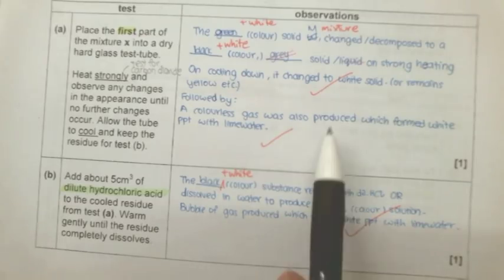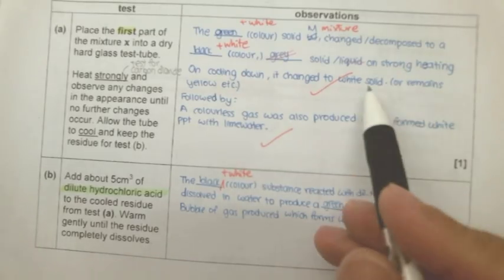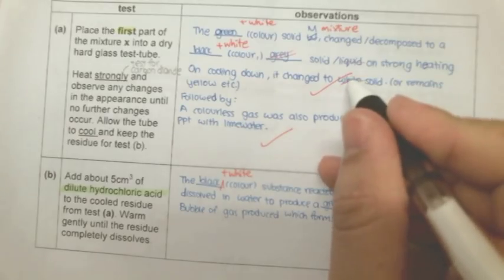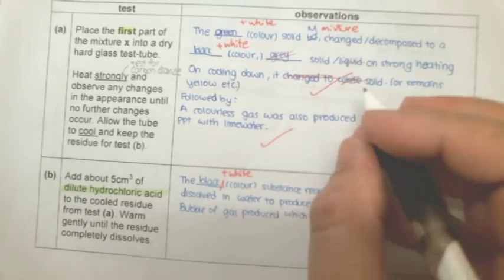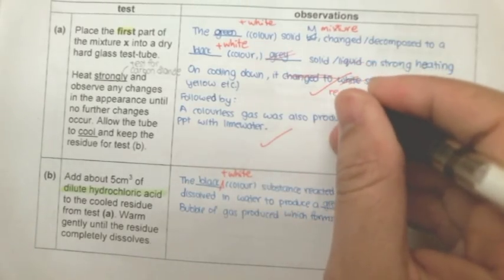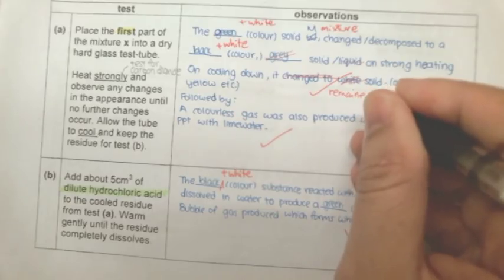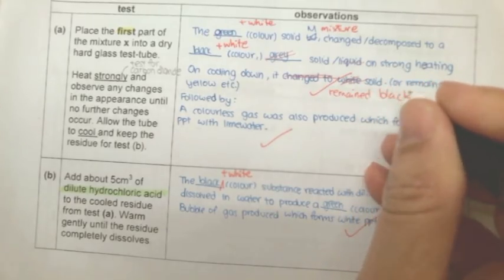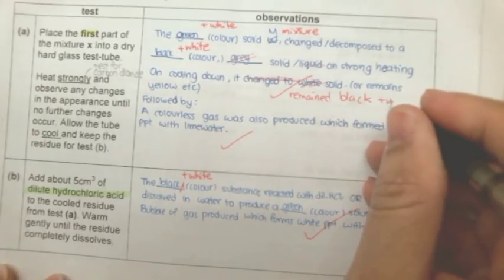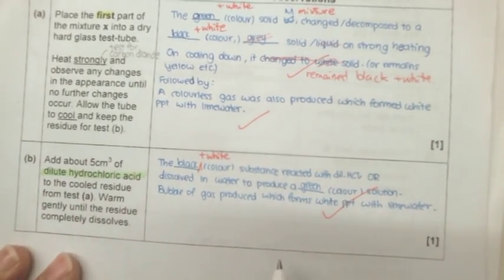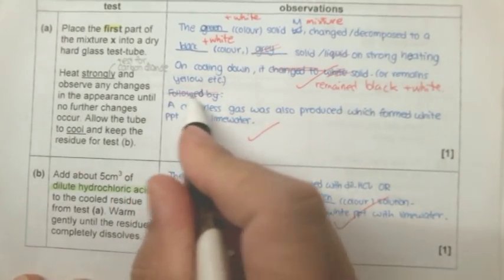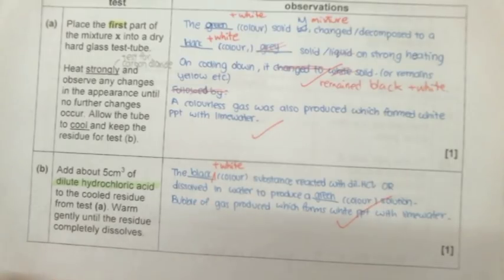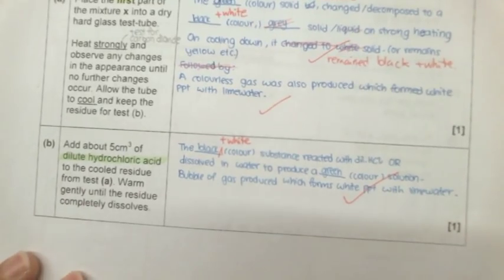On cooling down, it changed back to a white solid. No, it didn't because in this experiment, it remained black. So I would cancel it and write it remained black and white. You do not have to write this for a look, right? You just have to continue. When the colorless gas was produced, which formed white PPT with lime water. After the solid has cooled down, we are supposed to add dilute HCl or hydrochloric acid into the residue. Now what are you supposed to write?